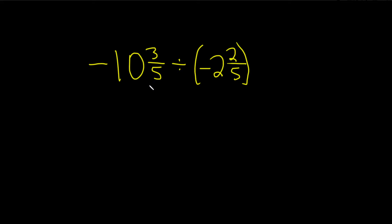To do that, we multiply 5 times 10, which gives us 50, then add the number on top, plus 3. That equals 53. So 5 times 10 is 50, plus 3 is 53. That number goes on top, the 5 goes on the bottom, and the negative sign just hangs out.